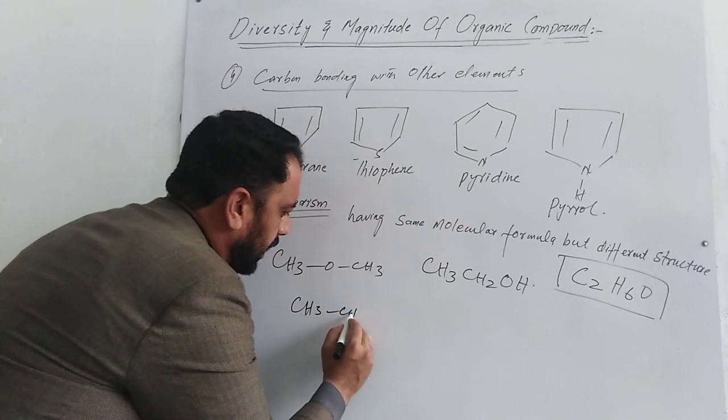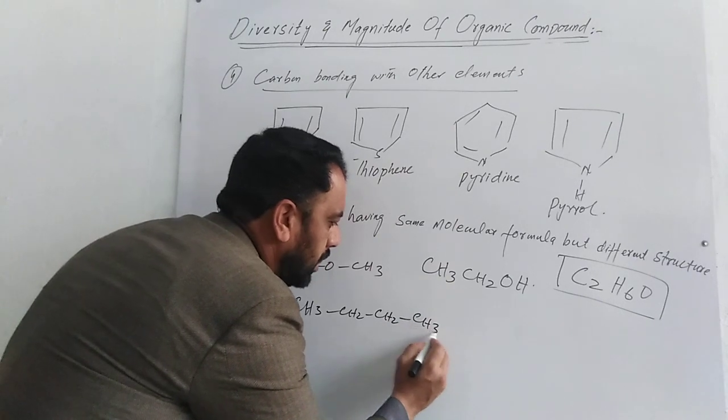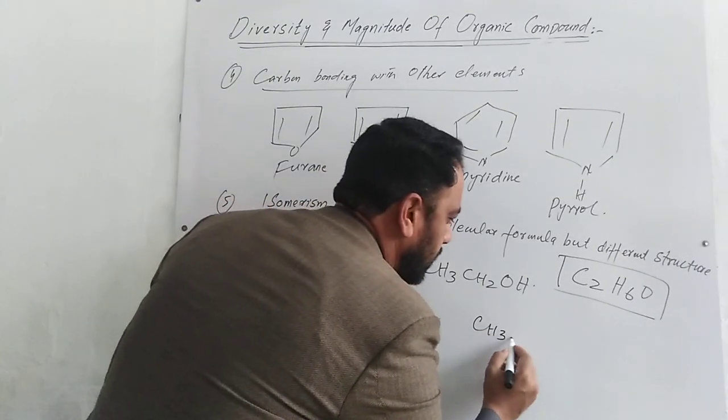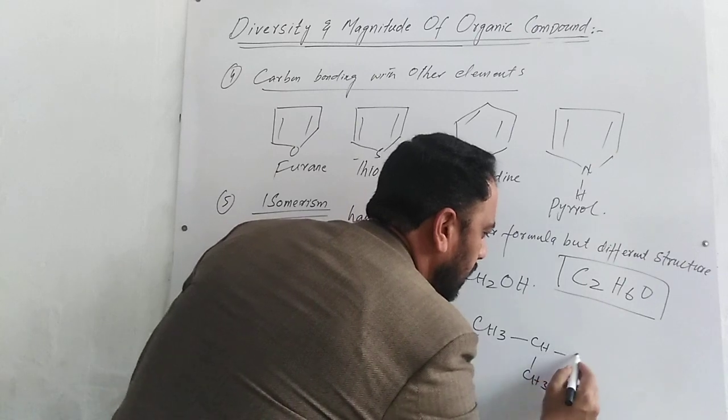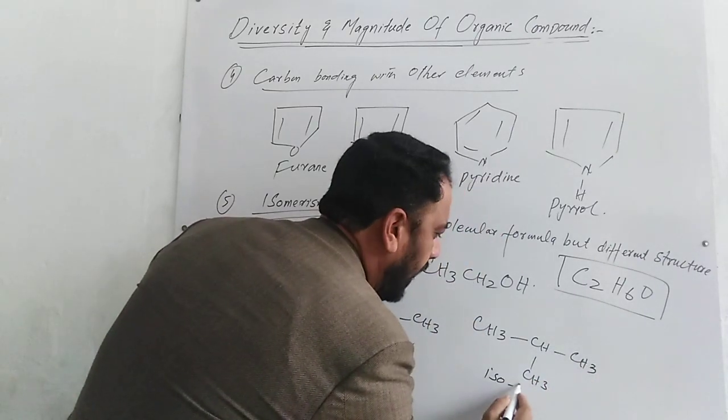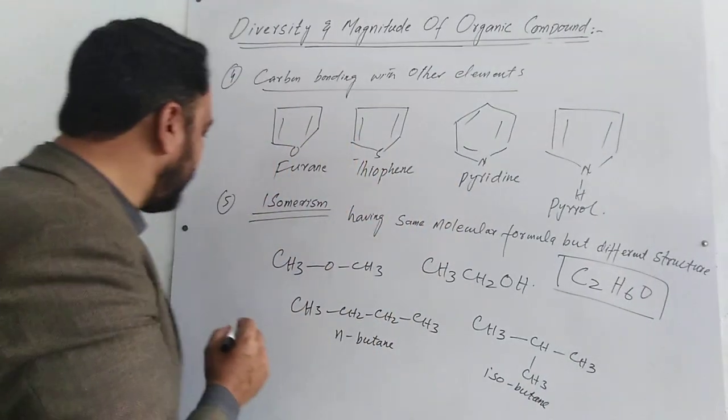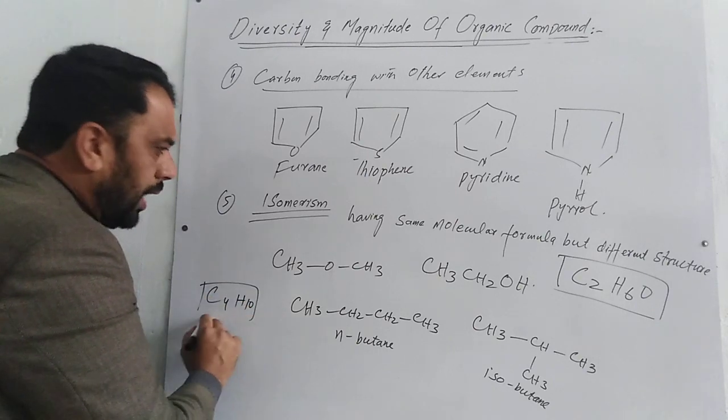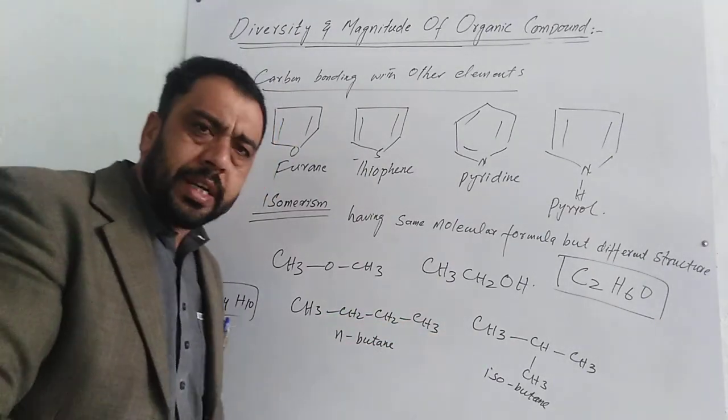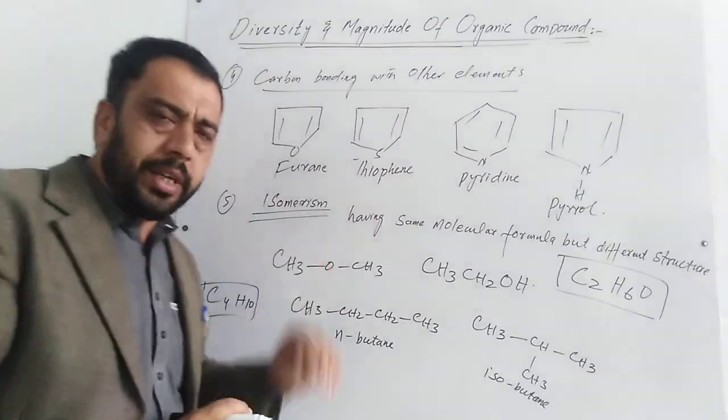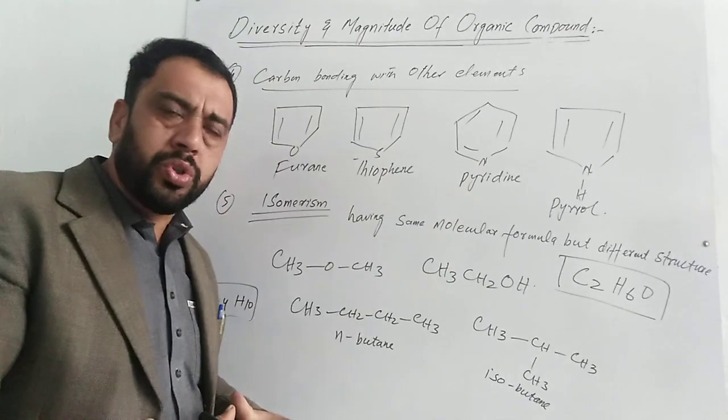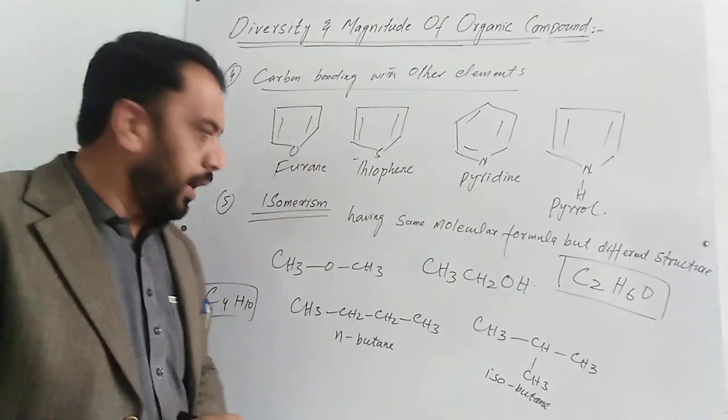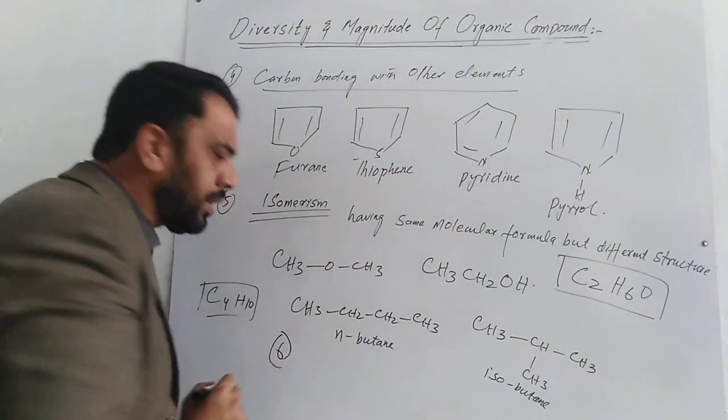CH3-CH2-CH2-CH3, this is n-butane, and CH3-CH(CH3)-CH3, this is isobutane. Butane has a formula C4H10. Both have the same molecular formula but different structures. This is called isomerism. So the large variety and number of organic compounds is partly due to isomerism.